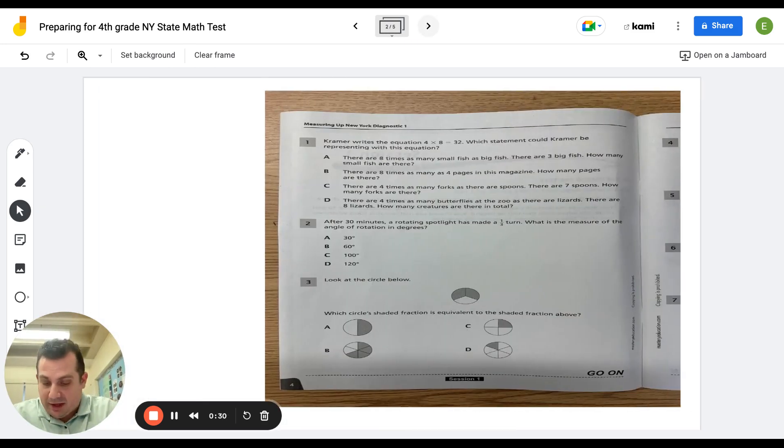All right. So we take a look here. This question number one says Kramer writes the equation four times eight equals 32. Which statement could Kramer be representing with this equation? So you look here. We know it's four times eight is 32. So how can we represent four times eight is 32? So that is right there. Option A, there are eight times as many small fish as big fish, and there are three big fish. Well, that would be eight times three. Nope. This problem is not eight times three. So I can cross that out right away.